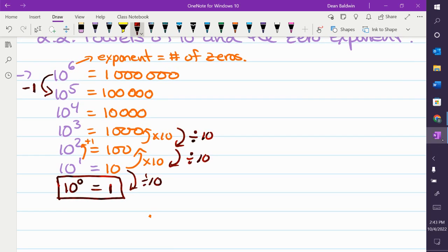So, on the orange side, I'm dividing by 10 going down. That gives me 1. On this side, you're taking away one exponent, which is the same as dividing by 10, which gives me 10 to the 0 is equal to 1. You can do this for any number.